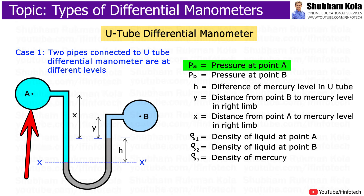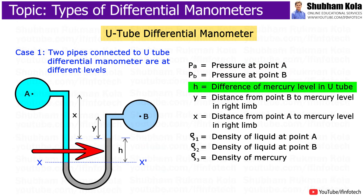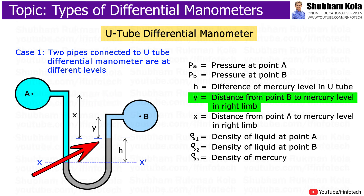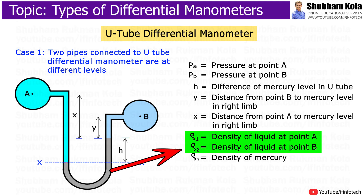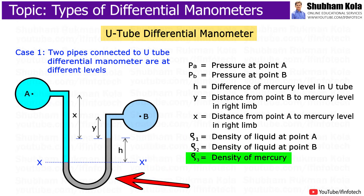Let pressure at point A be represented as PA and the pressure at point B be represented as PB. Let small h be the difference of mercury level in the U-tube. Small y represents the distance from point B to the mercury level in the right limb, and small x is the distance from point A to the mercury level in the right limb. Rho 1 and Rho 2 are the densities of the two different liquids at points A and B respectively, and Rho 3 is the density of mercury.